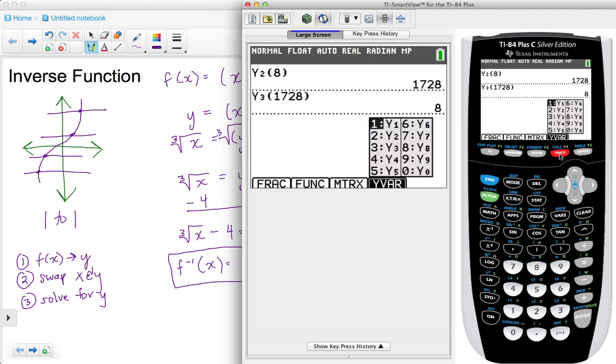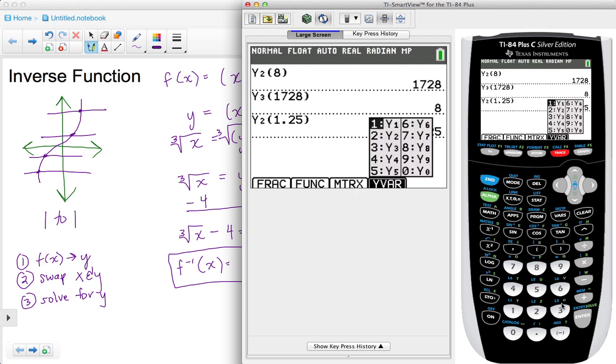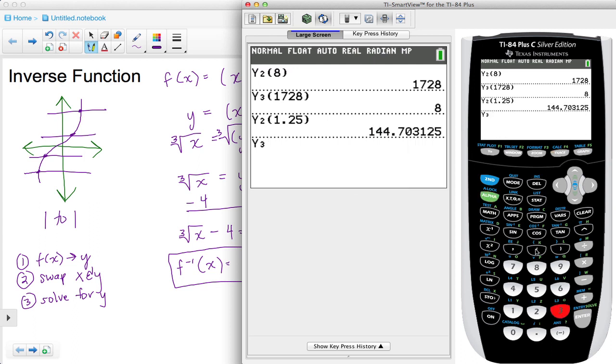Let's just do one more test. Let's go again with the original function. Let's say the input is 1.25. We see the output comes out to be 144 and 7 tenths and a little bit more. Let's go to the inverse, which we know is in position 3. We're going to make its input the same as this output here, so I arrow up, press enter to bring that value down, close off the parentheses and press enter. We see that does in fact come out to be 1 and 25 hundredths.